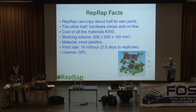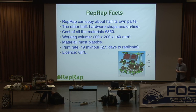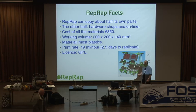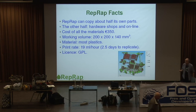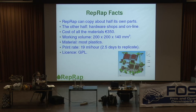The working volume — the biggest object it could produce — is 200 by 200 by 140 millimeters. It would take quite a while to make an object that big. One of the things about this technology is that the time it takes to make something is proportional to the volume of the object, and the volume goes up as the cube of its linear dimensions. So if you double the size of something, it takes eight times longer to print — one of the disadvantages of this technology.